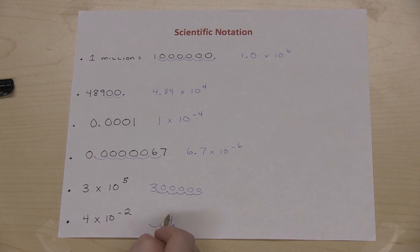So I'll start by moving the decimal two places, 1, 2, and then I fill in with my 0. So 4 times 10 to the minus 2 is the same thing as 0.04. Thank you.